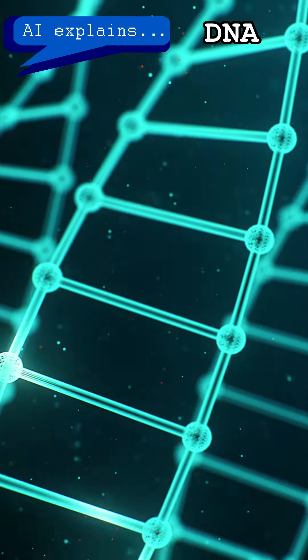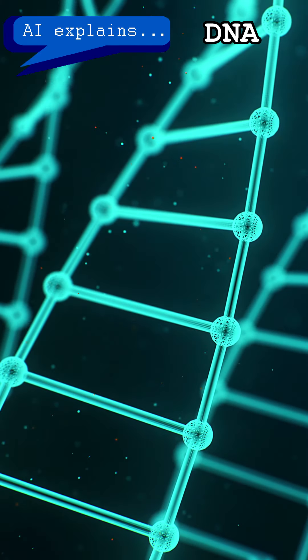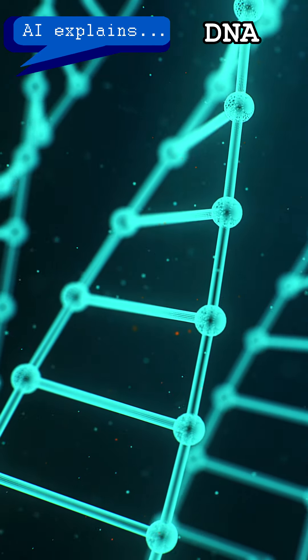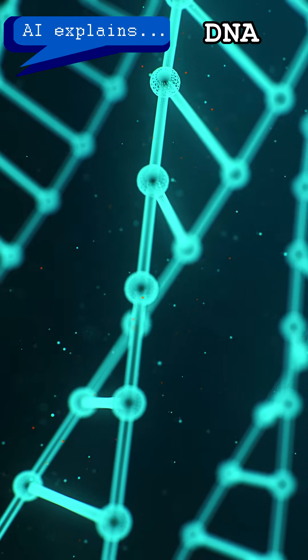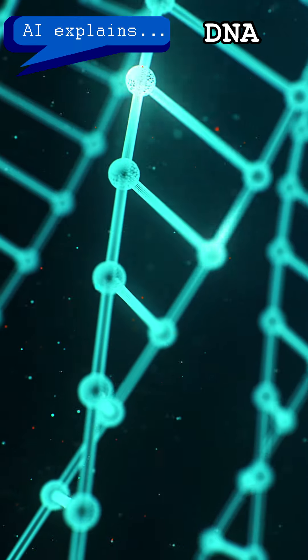DNA is made up of four building blocks called nucleotides, which come in different shapes and sizes. These nucleotides are like the letters of the DNA code, and they spell out the instructions for making proteins, which are the building blocks of your body.